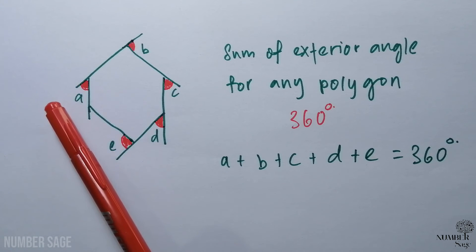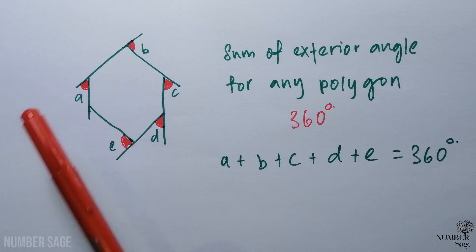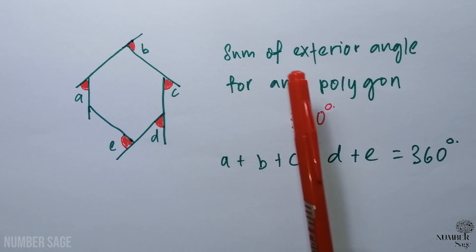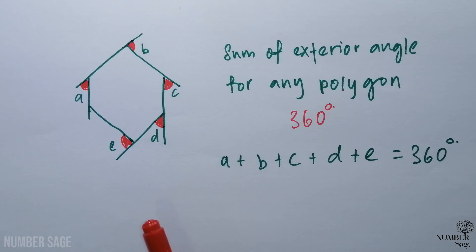The sum of exterior angle for any polygon is 360 degrees. For example, in this case, a, b, c, d, e—all sum will give us 360 degrees.